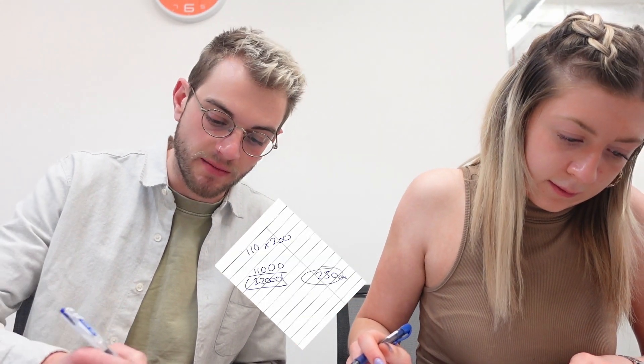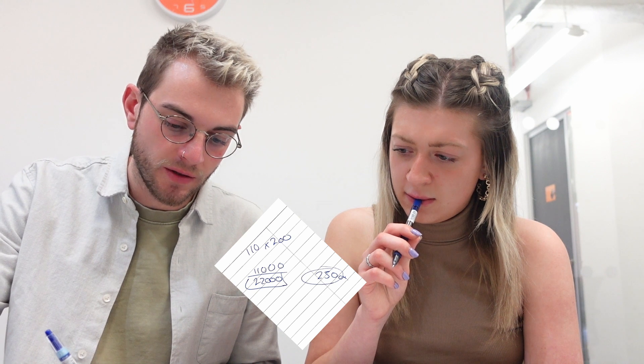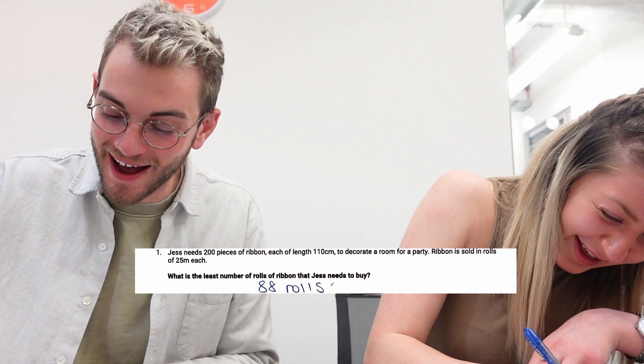So 200 times 110, divided by 25. 880. Oh, metres. Sorry. Okay, well then it's 88, isn't it? There's 1,000 centimetres in a metre. There's 1,000 centimetres in a metre. So let's change 205 metres to 250 centimetres. 11,000 centimetres in total, times it by 2 — 22,000. So then we divide that by 250. 88? I think that's right. So she needs 88 rolls. Okay, yeah. I'm going with that. I'm dying on that hill.